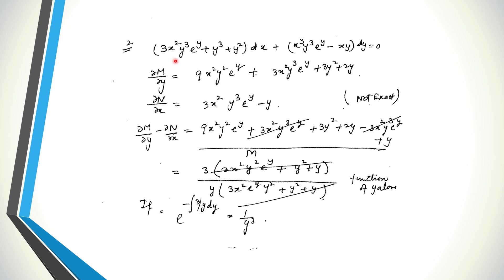Let's see one more example. We are given the equation with M = 3x²y³e^y + y³ + y² and the corresponding N. Finding ∂M/∂y and ∂N/∂x shows they are not equal, so the equation is not exact. We take the difference of the two partial derivatives; one term cancels. We check division by M: the result is a function of y alone since a common factor appears. Dividing by M gives g(y) = 3/y, so the integrating factor is e to the power of the integral of −3/y dy, which equals 1/y³.